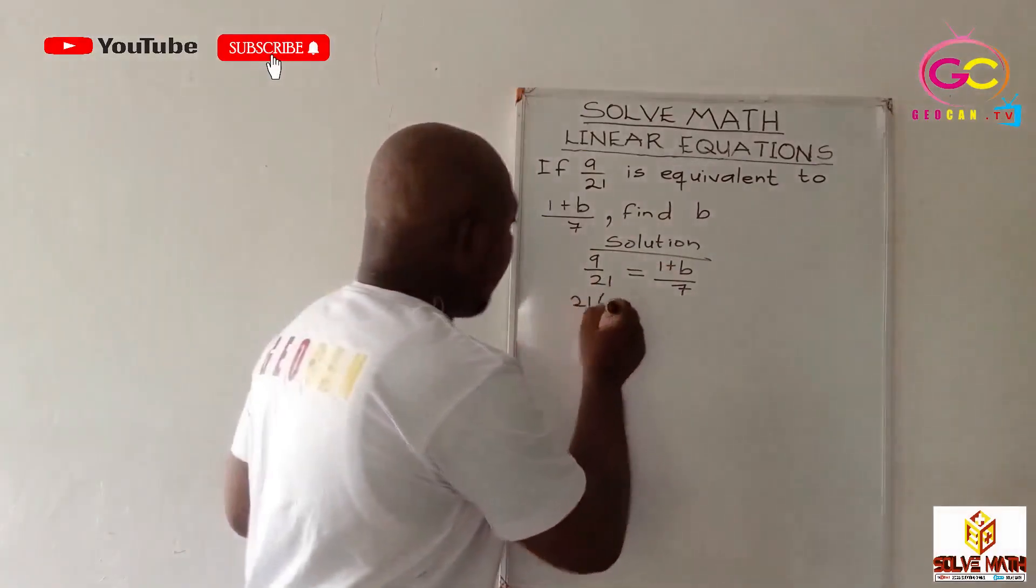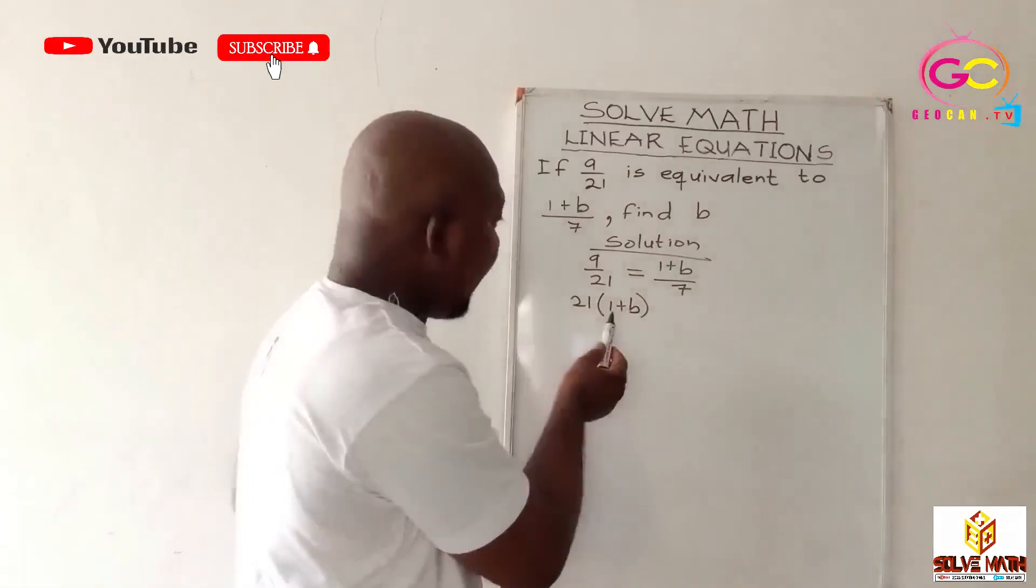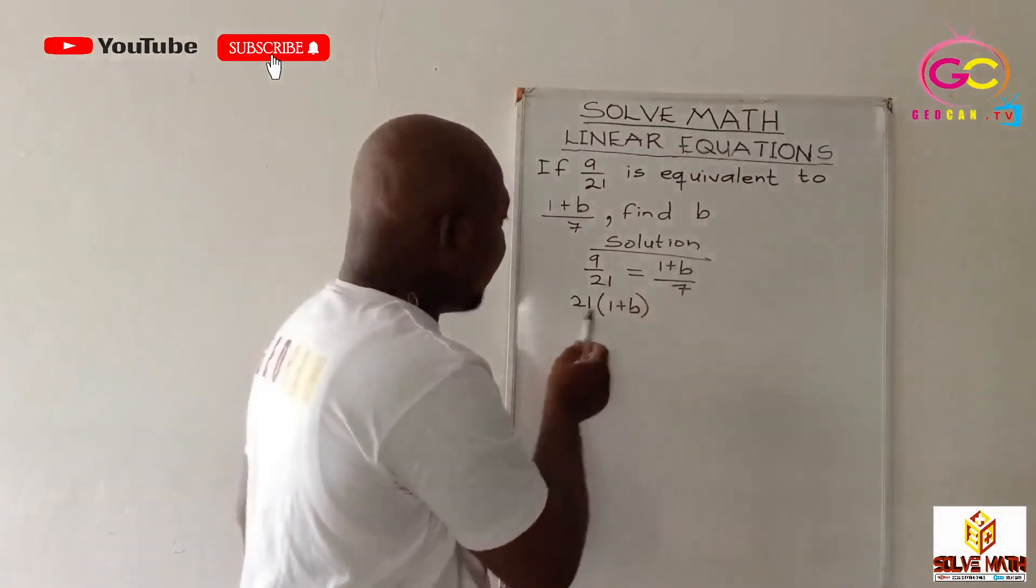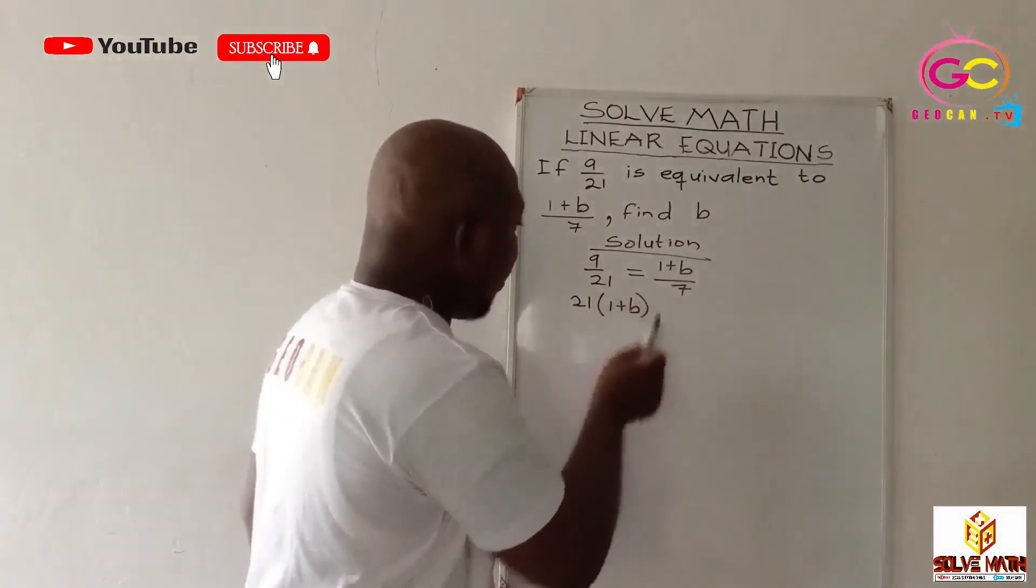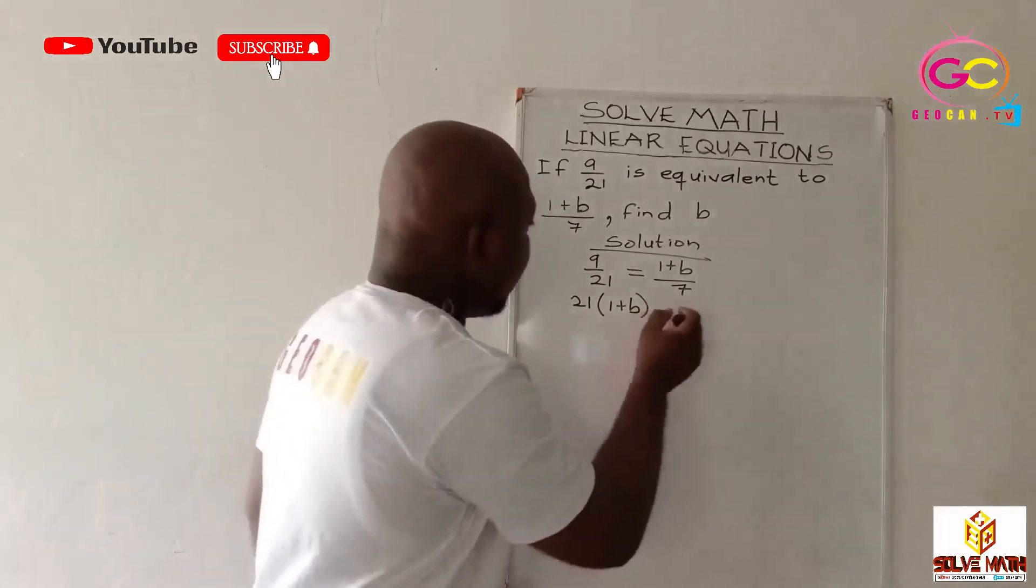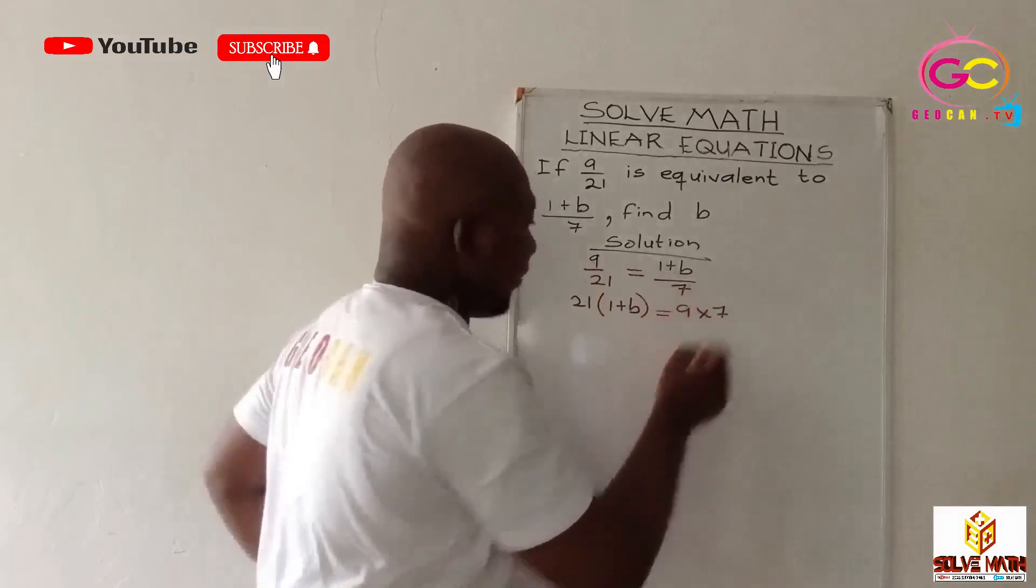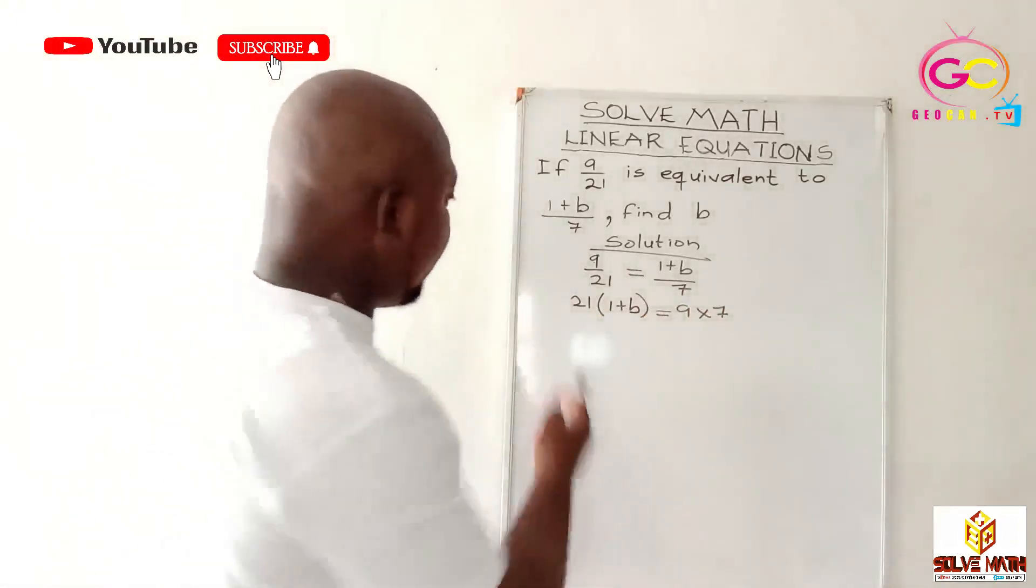So let's do that. So we have 21 will multiply 1 plus B. Please, it has to be in brackets because it's 1 plus B. The 21 is multiplying all 1 plus B. So it has to be in brackets. Good. It's equal to now 9 times what? 7. 9 times 7. Good. We are good to go, right? What do we have here?